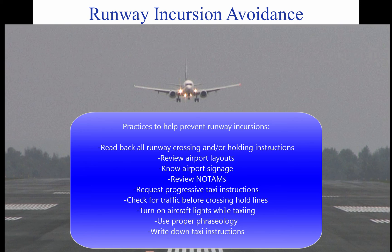Practices to help prevent a runway incursion include: read back all runway crossing and/or hold instructions; review airport layouts as part of preflight planning, before descending to land, and while taxiing as needed; review NOTAMs for information on runway/taxiway closures and construction areas; request progressive taxi instructions from ATC when unsure of the taxi route; check for traffic before crossing any runway hold line and before entering a taxiway; turn on aircraft lights and rotating beacon or strobe lights while taxiing. When landing, clear the active runway as soon as possible, then wait for taxi instructions before further movement. Write down complex taxi instructions at unfamiliar airports.